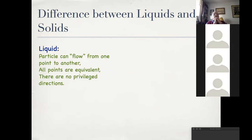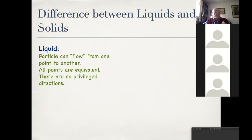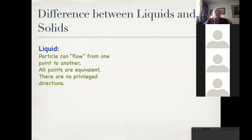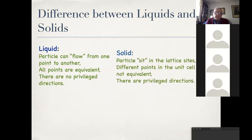In nature, many substances are commonly called liquids but do not actually fulfill all three conditions. For example, if you are watching me on a liquid crystal display, those liquid crystal substances — discovered at the turn of the 20th century — are in a sense both liquids and solids. They flow, but they have privileged directions and not all points in the liquid crystal are equivalent.